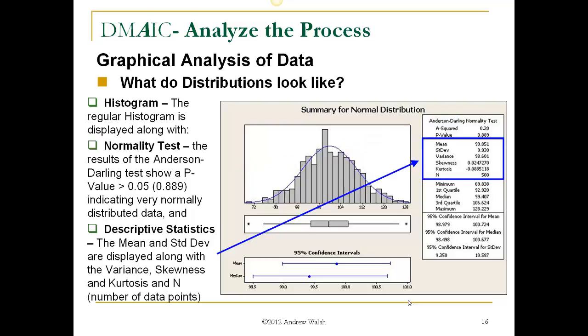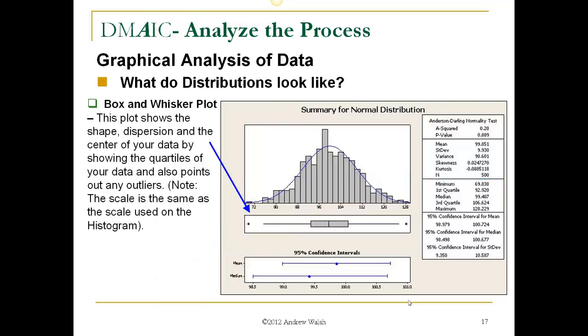The box and whisker plot is also shown, and this shows the shape, dispersion, and the center of your data by showing the quartiles of your data. And also points out any potential outliers. Now note, the scale is the exact same scale as used in the histogram. So the mean, the median point, and the mean point should line up, and all the data points should line up. The descriptive statistics give you the minimum and maximum values, the first and third quartiles, and the median shown here.